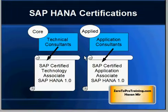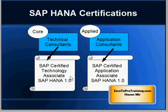To summarize what we have seen so far: there are two streams — technical and application. The technical stream tests core topics and leads to the Technology Associate certification. The application stream tests applied topics and leads to the Application Associate certification. Both certifications you are seeing on the screen are at the associate level.